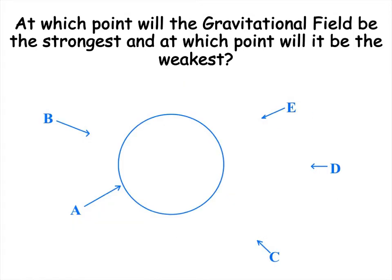So a little concept check. At which point would the gravitational field be the strongest and at which point will it be the weakest? Well, hopefully you say that over here, A is going to be our strongest, the closest to the center of the earth. And then the furthest one out is going to be D. D definitely looks like he's the furthest one out and he has the smallest arrow, so he's the weakest.